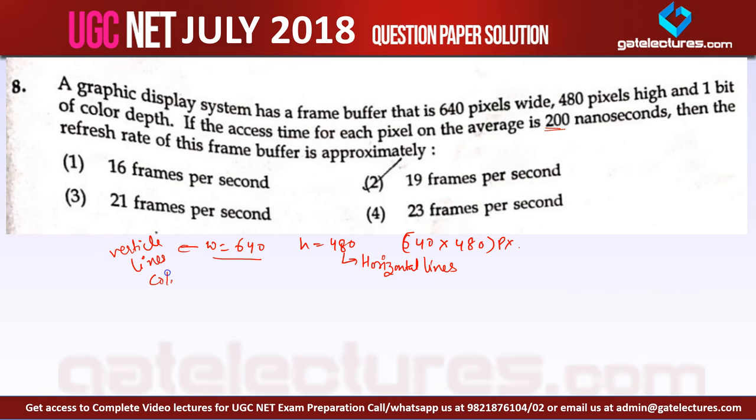And the color depth that is given is 1 bit per pixel. What does it mean? It means that if this is the display, now in this display, here this is 640 pixels. 640 means if you count the number of vertical lines here. This is vertical line number 1, 2, 3, 4, 5, 6, and so on. The total vertical lines will be 640.